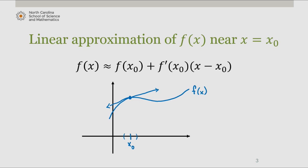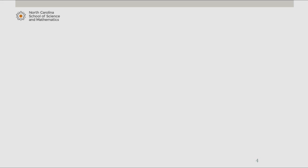What if we could enhance the accuracy of this approximation? What if, in addition to matching the function value and slope at a certain point with the approximating polynomial, we also match the concavity of the function? This would mean matching the second derivative of the polynomial with that of the function at the specified point. Expanding on this idea, we match the first n derivatives of our function with that of the polynomial we're generating.